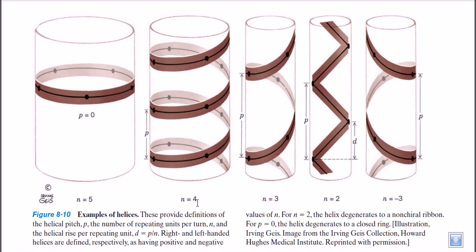So if we stretch out a helix we have a higher pitch and a lower n, and if we compress the helix we have a higher n value — meaning more residues per turn — but a lower pitch. That's the basic concept. Now another thing I must talk about is called the helix rise.